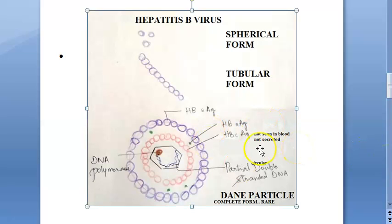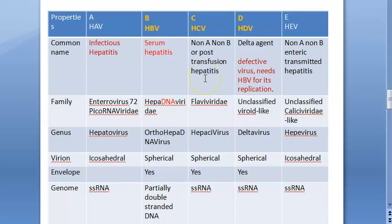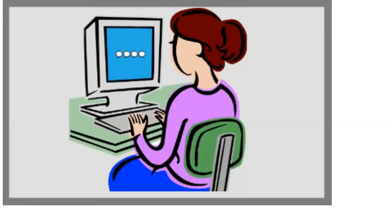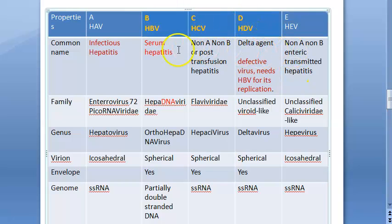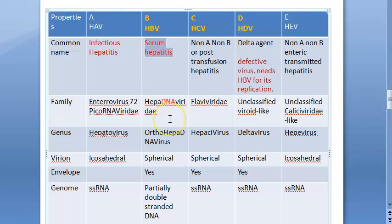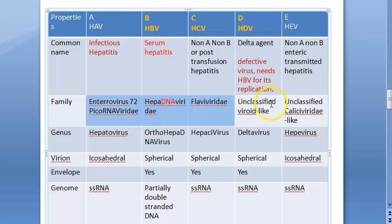Hepatitis B virus structure is very important for exams. For now, our focus is on learning the differences between hepatitis A, B, C, D, and E. Hepatitis A is called HAV, commonly known as infectious hepatitis. Hepatitis B is known as serum hepatitis. Note that B, C, D share certain features, while A and E share certain features.